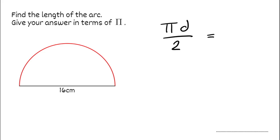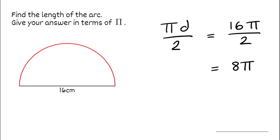For this question we'd have pi times the diameter. The diameter of the circle is 16 centimetres, so this would be 16 pi divided by 2, which simplifies to 8 pi. That would be our final answer, because it wants our answer in terms of pi. The units are centimetres because the diameter is in centimetres, so the answer to this one is 8 pi centimetres.